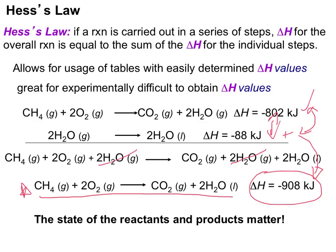Remember that the thermochemical equations you're utilizing in Hess's law must sum to the overall equation you're looking for. The enthalpy values from each of those thermochemical equations will sum to the overall delta H value for the chemical equation you're actually looking for. When using Hess's law, we pay attention to the states of matter, the position of reactants and products, and make any necessary adjustments, as we'll see in the next few slides.